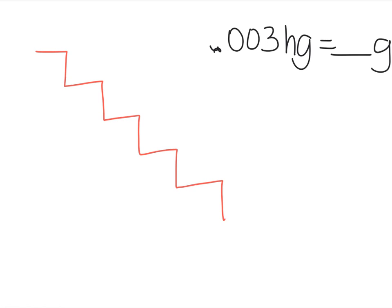I'll try three thousandths of a hectogram. And how many grams would that be? Well, the first thing I have to do is draw that stair. And I said there are seven, so one, two, three, four, five, six, seven. And let's label. We have King Henry died unexpectedly drinking chocolate milk.